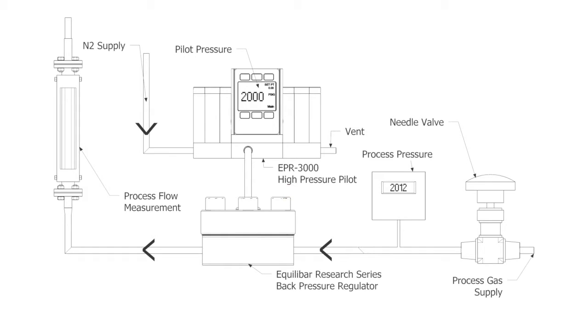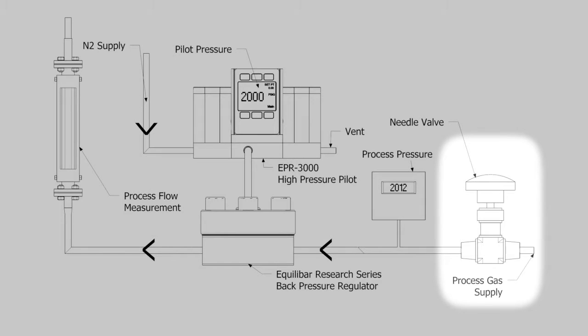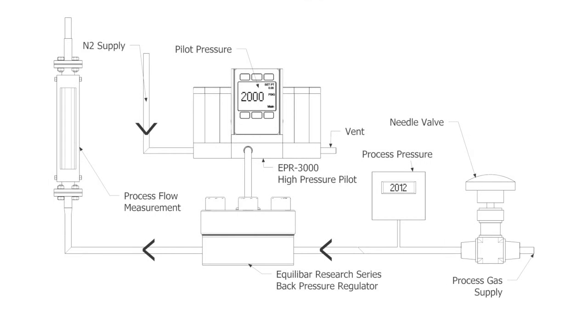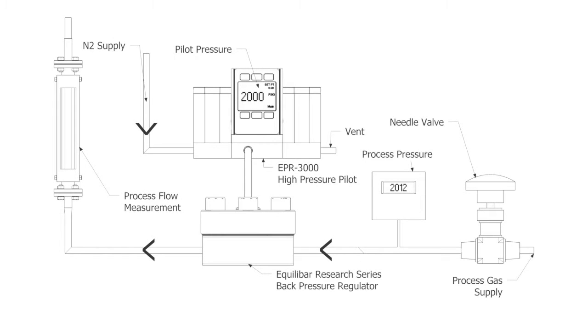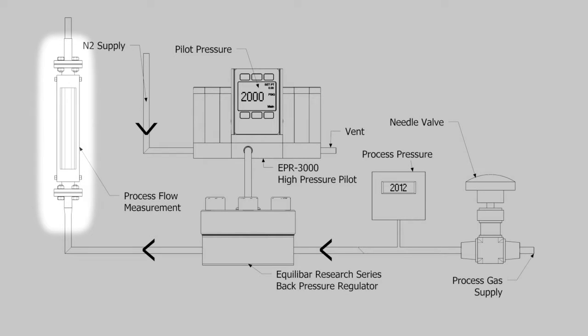In this video, we will use a separate nitrogen supply to simulate chemical process gases. We will use a needle valve to simulate varying flow rates coming from a research reactor. The process pressure is measured by a WIKA pressure sensor, and the process gas flow rate is visualized by a bank of rotometers.